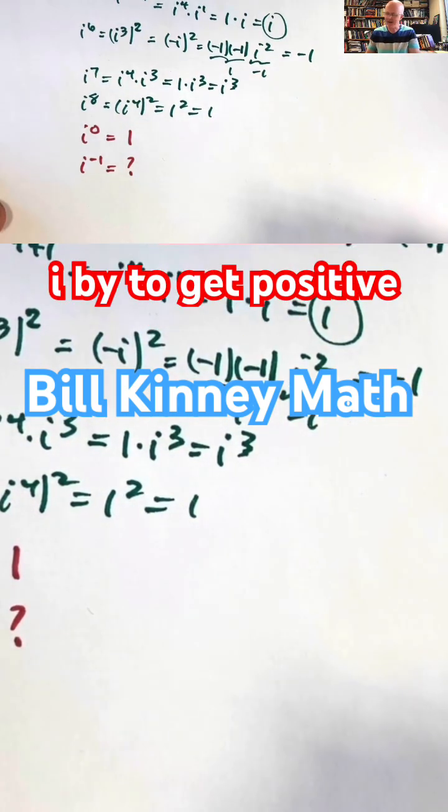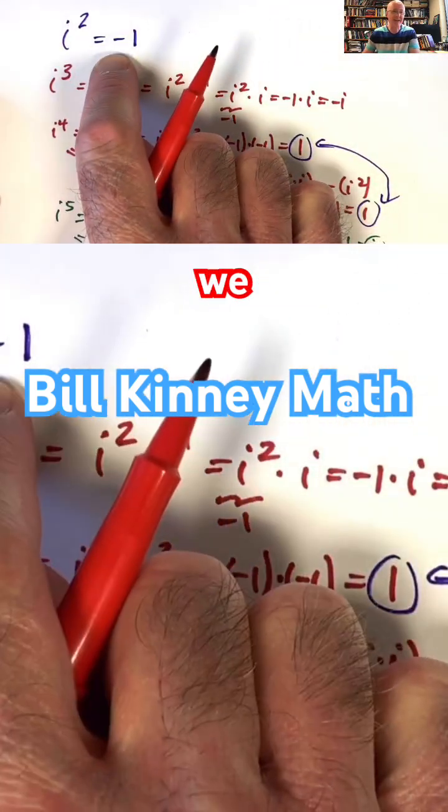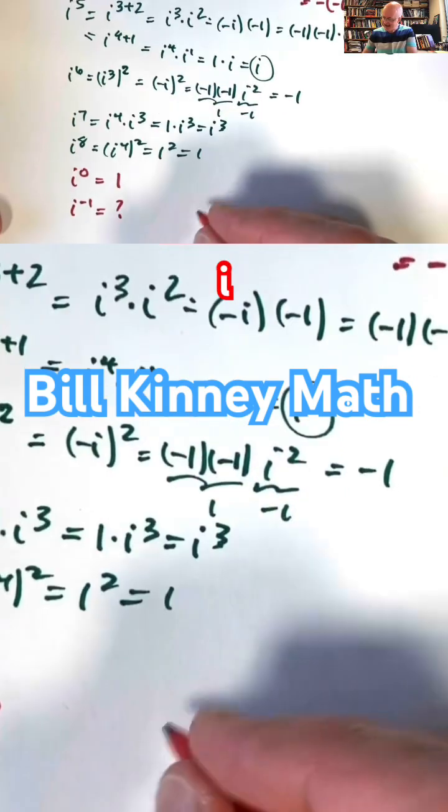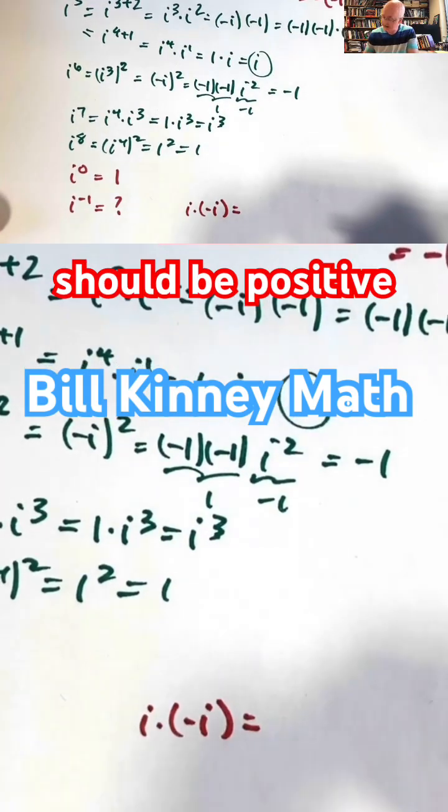What do we need to multiply i by to get positive 1? We know when we multiply i by itself, we get negative 1. i times negative i, therefore, should be positive 1.